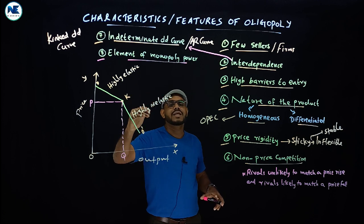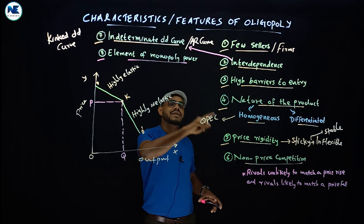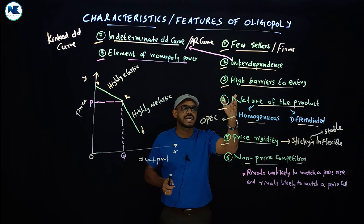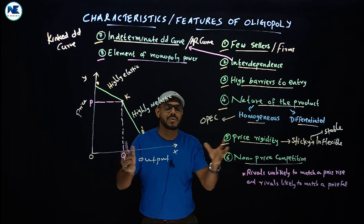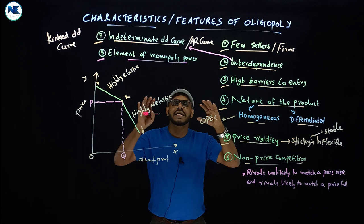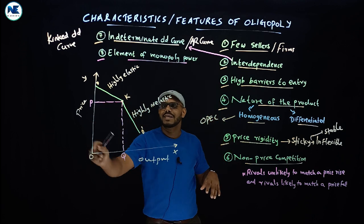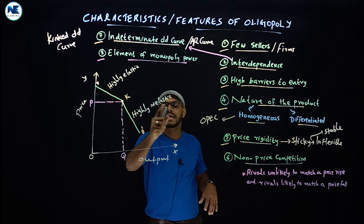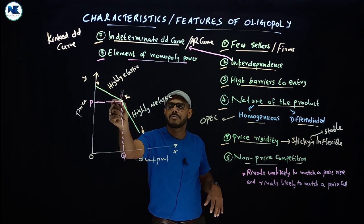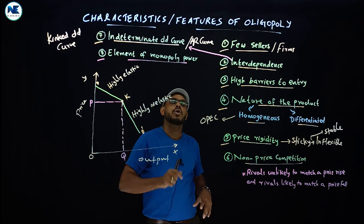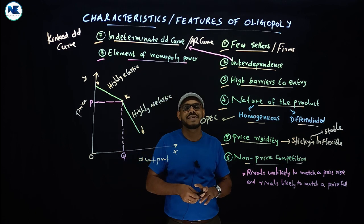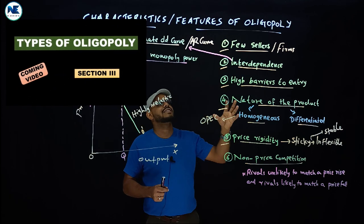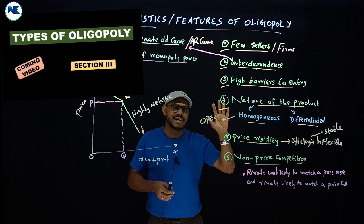However, for any price or output decision, firms must consider the actions and reactions expected from rival firms — the feature of interdependence. The upper portion of the demand curve is highly elastic and the lower portion is highly inelastic. In the coming video, we will discuss another area: types of oligopoly. Have a nice day, thank you.